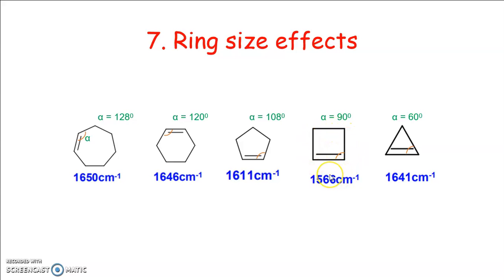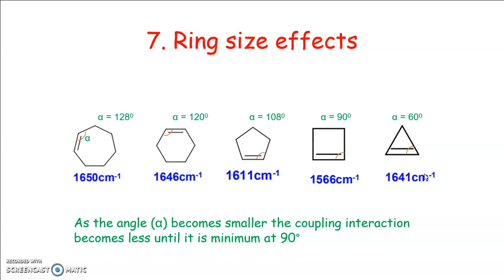When C bonds are perpendicular and the vibrational modes are orthogonal, they do not couple effectively. When the bond angle is greater than or less than 90°, effective coupling occurs, leading to a higher frequency of absorption. As the angle becomes smaller, the coupling interaction becomes less until it reaches a minimum at 90°, and for cyclopropane it again increases.